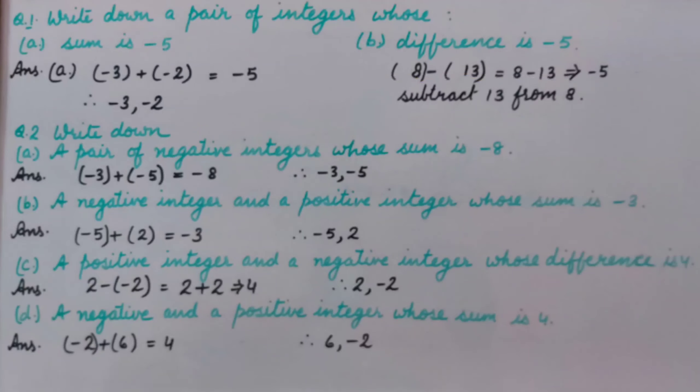Question number 2. Write down a pair of negative integers whose sum is minus 8. We have to take negative integers only. I have taken minus 3 and minus 5, whose sum is minus 8. You can take any other two negative integers.